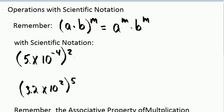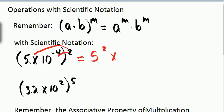Take 5 times 10 to the negative 4th, all raised to the power 2, and distribute this 2 to both the 5 and the 10 to the negative 4th. We get 5 squared times 10 to the negative 4th, all raised to the second power.